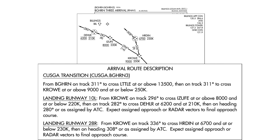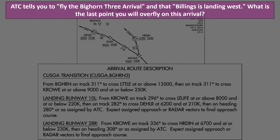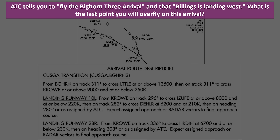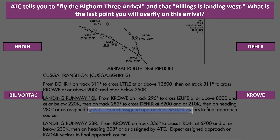You're inbound to Billings Logan International Airport, still about 100 miles away. ATC tells you to fly the Bighorn 3 arrival and that Billings is landing west. What's the last point you'll overfly on this arrival? Harden, Deller, the Billings Vortac, or Crow? We'll put up a timer and give you a few seconds.